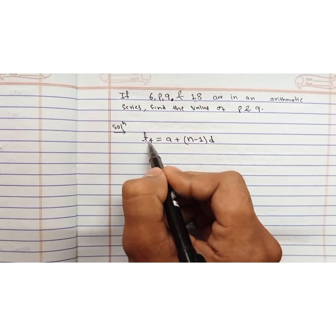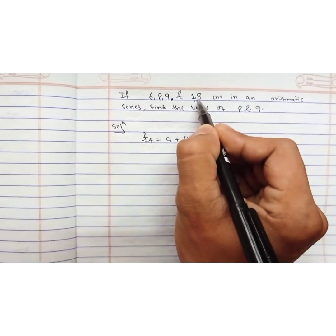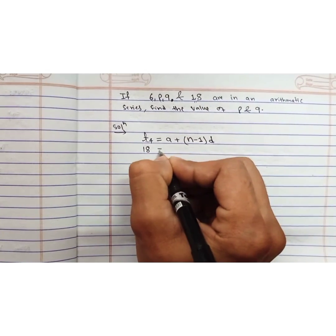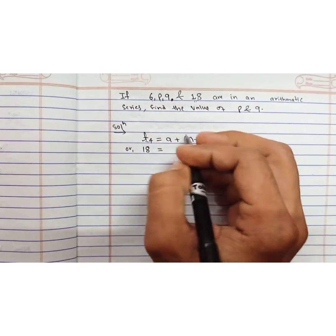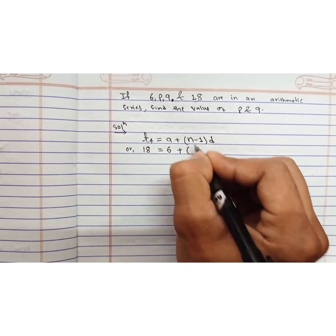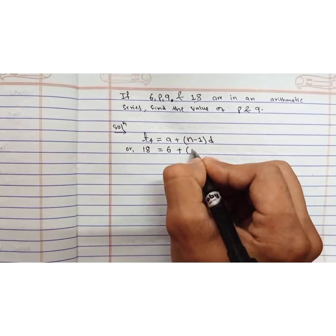Here we can write in place of t₄ we can write 18, because 18 is the fourth term. And in place of a we can write 6, plus in place of n we can write 4 because this is the fourth term.